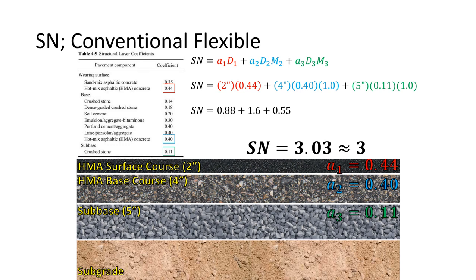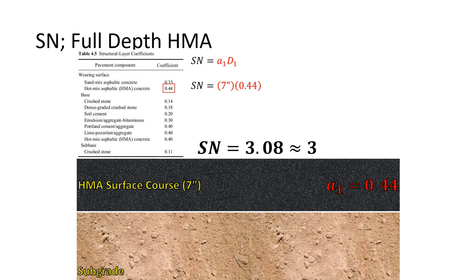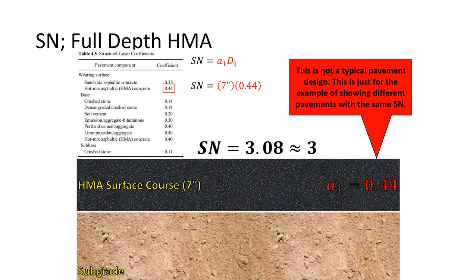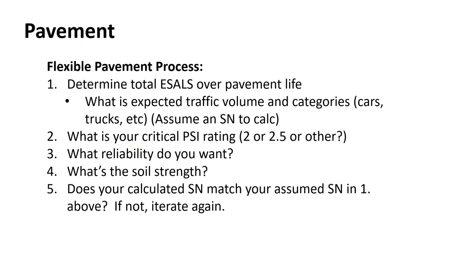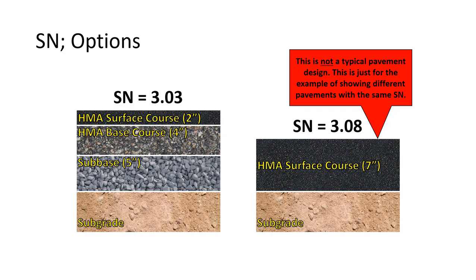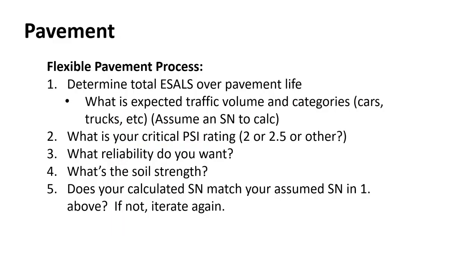Both designs theoretically have the same life expectancy — they can handle as much traffic and last just as long. Once you get the structural number from the AASHTO equation, you just pick your layers and drop them in. You can also add geotextile, which manufacturers claim is equivalent to 4–6 inches of aggregate. Whatever combination of layers you use, you just have to achieve the structural number the equation tells you that you need.